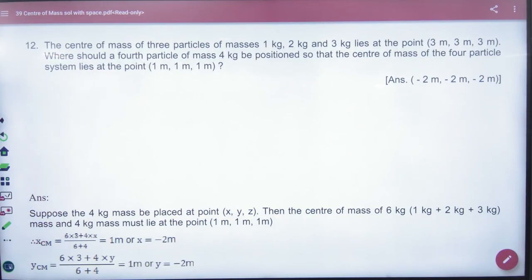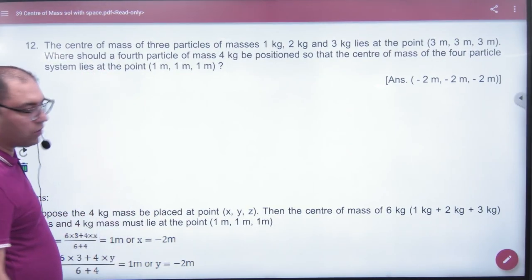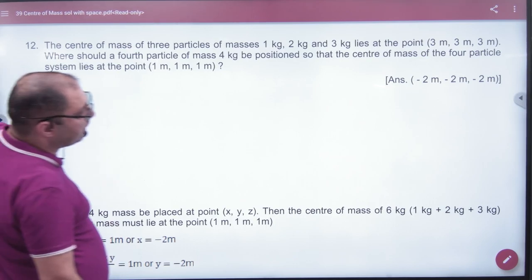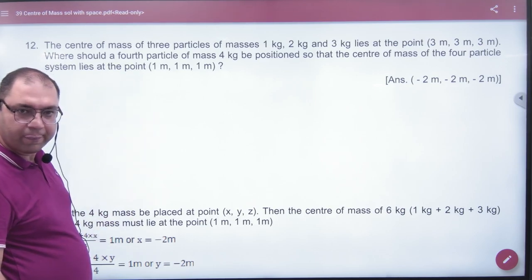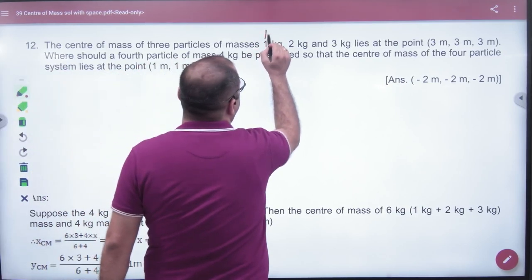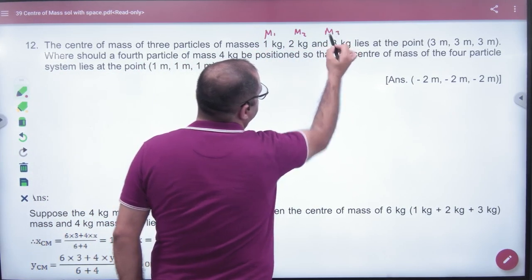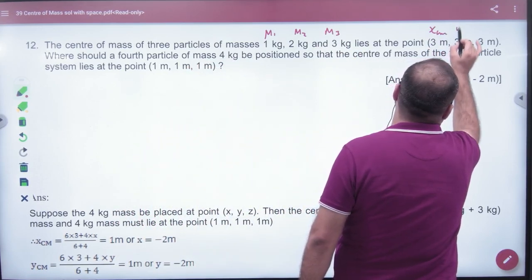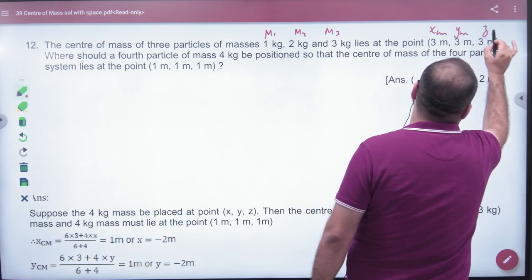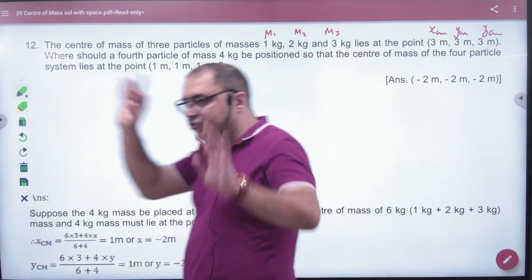Let's do this. The question is, the center of mass of 3 particles of mass 1 kg, 2 kg and 3 kg lies at point (3,3,3). There are 3 particles and its center of mass is given. So if this is M1, M2 and M3, I have X center of mass, Y center of mass and Z center of mass. I have not given their individual coordinates.